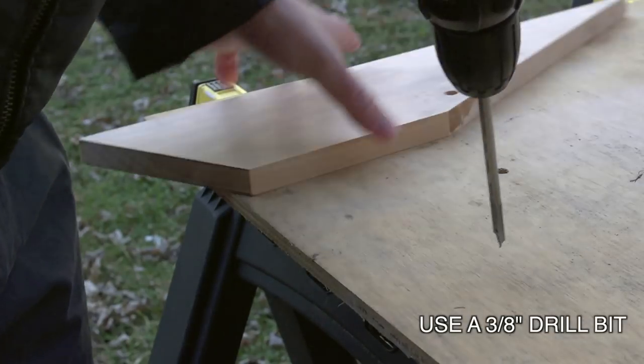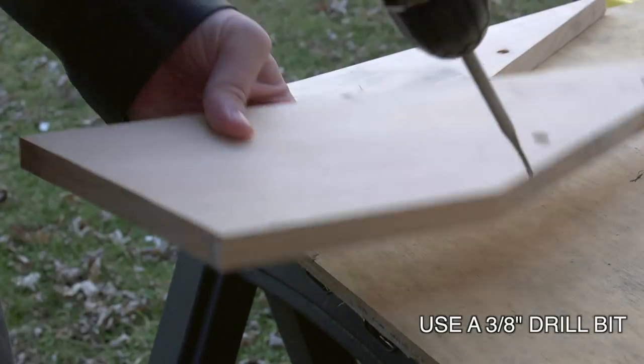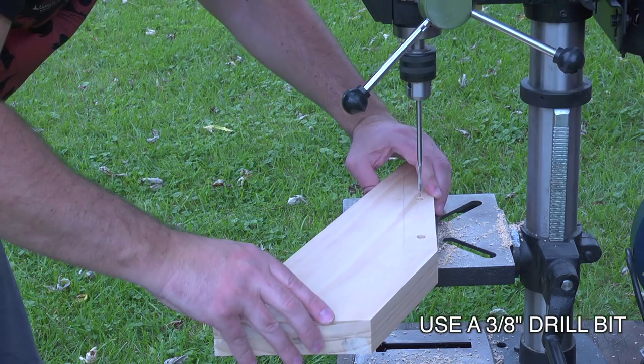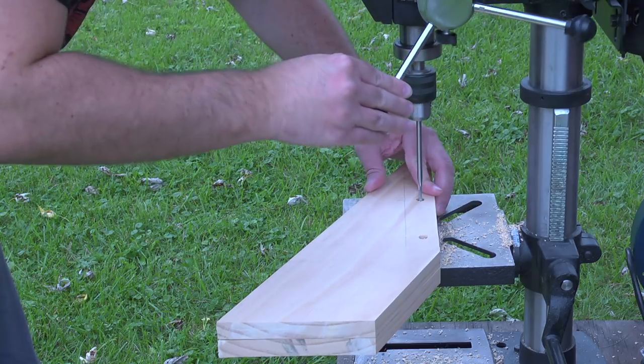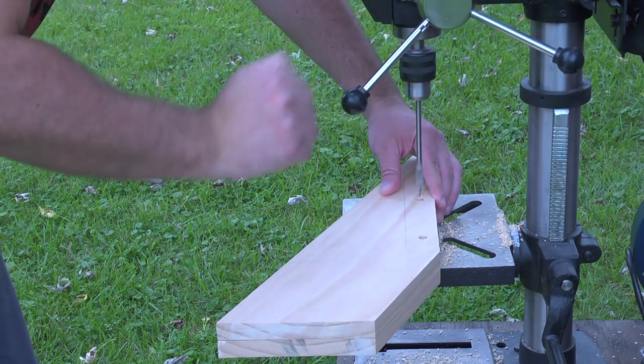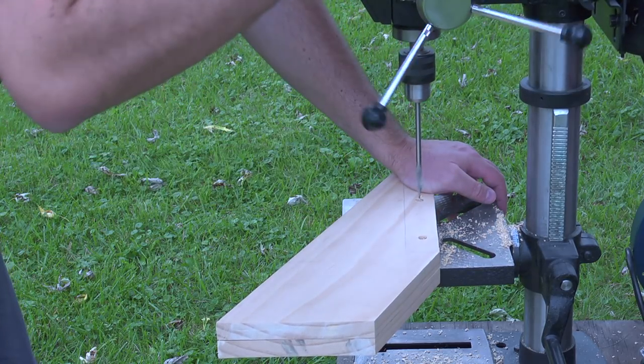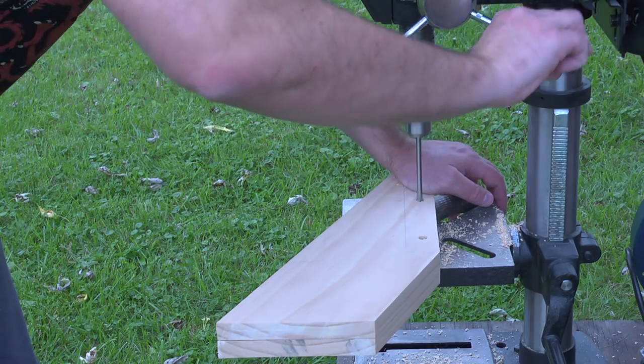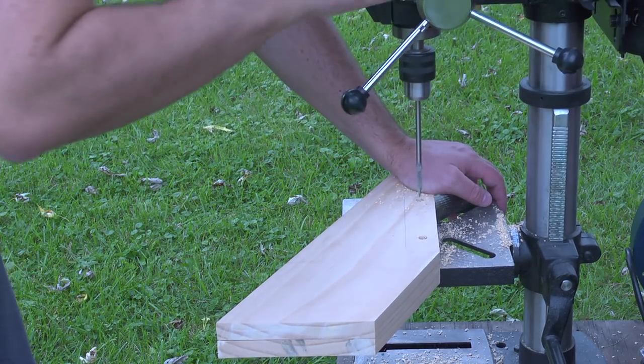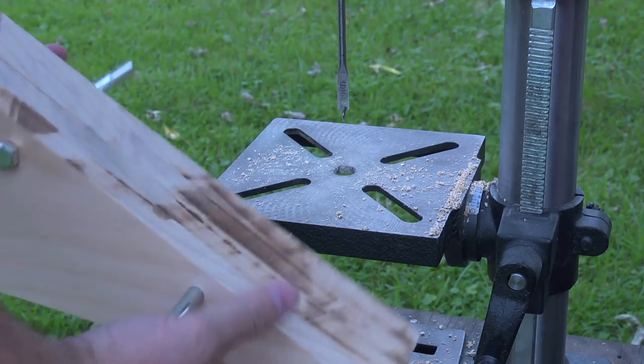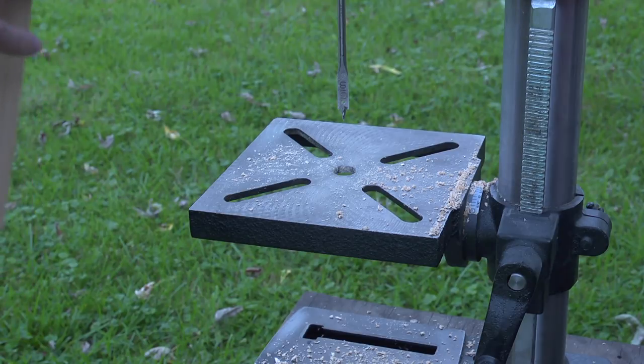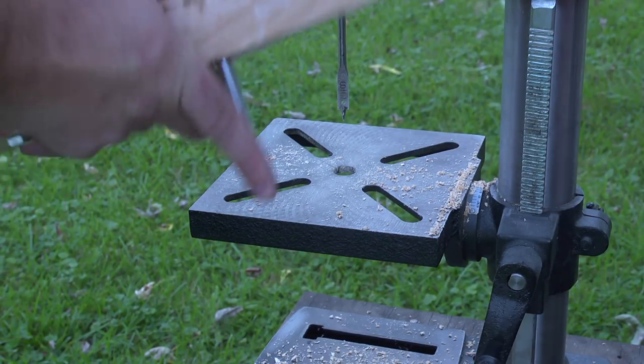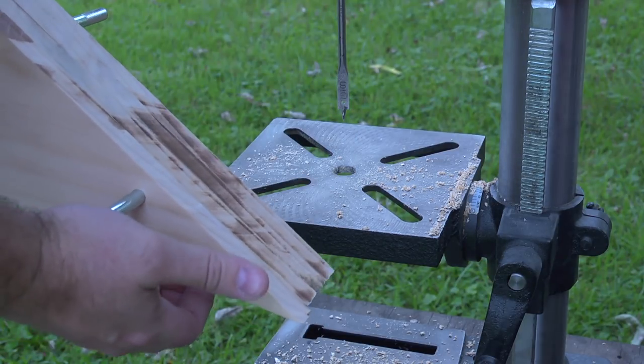Usually I use a hand drill for the pilot hole, and then I use the drill press because I can line up more than one piece of wood on top of each other. A lot of times I just slide the bolt all the way through just to make sure that everything lines up. If you need to do a little bit of sanding, that's fine.